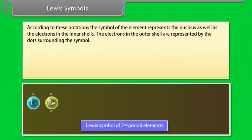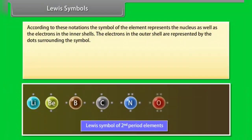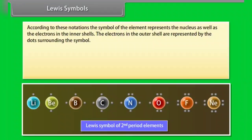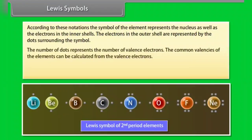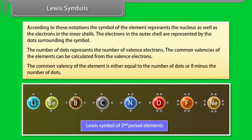According to Lewis symbol notations, the symbol of the element represents the nucleus as well as the electrons in the inner shells. The electrons in the outer shell are represented by dots surrounding the symbol. The number of dots represents the number of valency electrons.